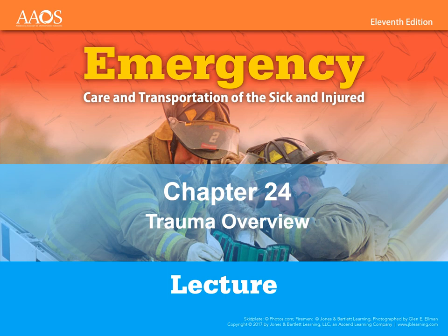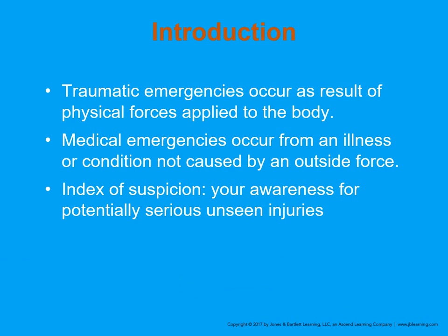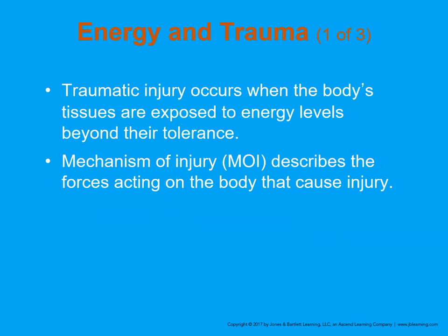Chapter 24 Trauma Overview. Trauma, or traumatic injuries, or traumatic emergencies occur as a result of physical forces being applied upon the body. During a traumatic injury, we need to also take into account the possibility of medical emergencies that occur because of the injury or that may have precipitated the injury. We use the term index of suspicion, or our awareness for potential serious injury or uncertainty, to help us identify potential injuries that we cannot see.